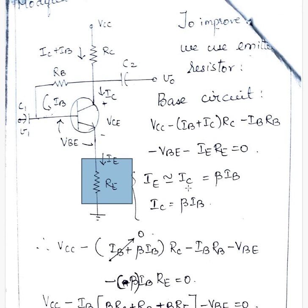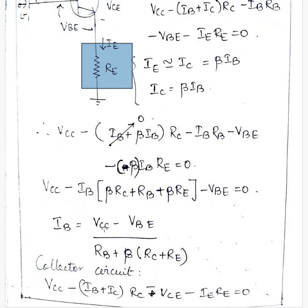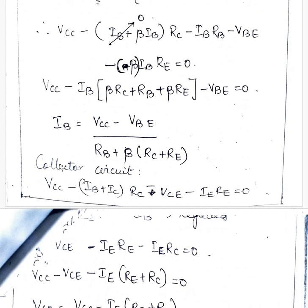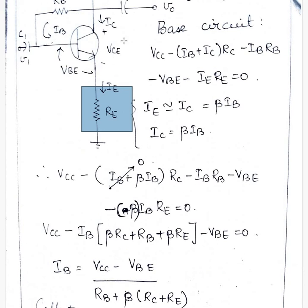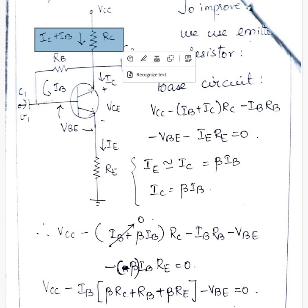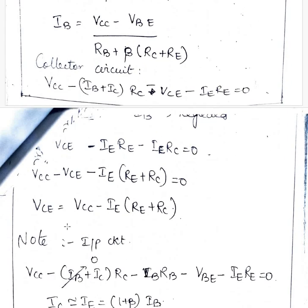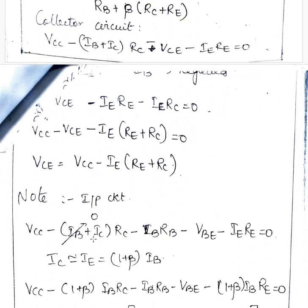So replacing IE is nearly equal to IC equal to beta IB and IC as beta IB we have IB is VCC minus VBE by RB plus beta into RC plus RE and for collector circuit it is VCC minus IC plus IB into RC minus VCE minus IERE equal to 0 and we have equation for VCE equal to.